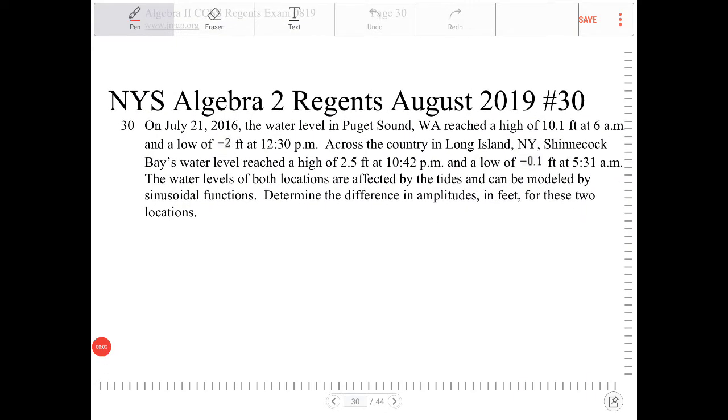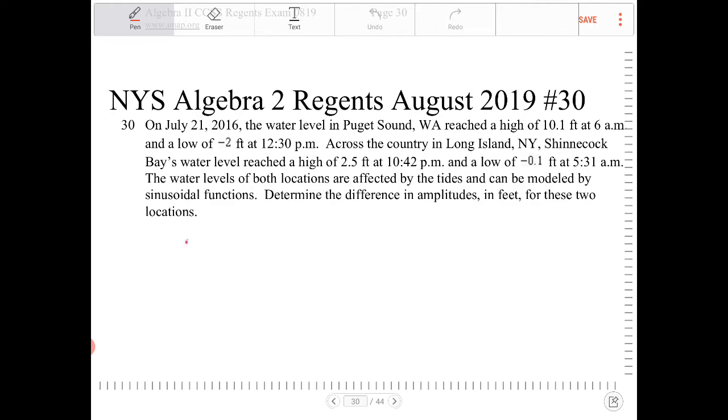On July 21st, 2016, the water level in Puget Sound, Washington, reached a high of 10.1 feet at 6 a.m. So let me just quickly draw something that resembles that. We have a high at 6 a.m., and this is 10.1 feet.